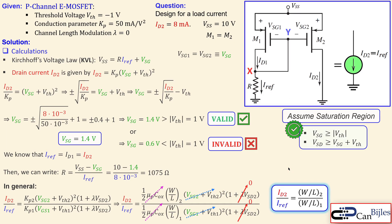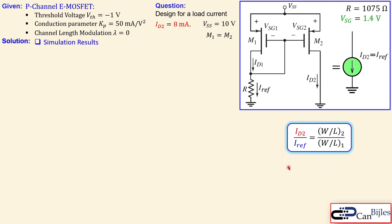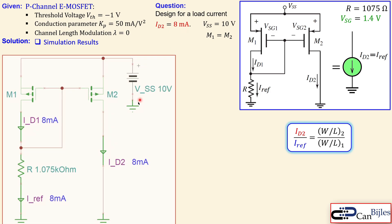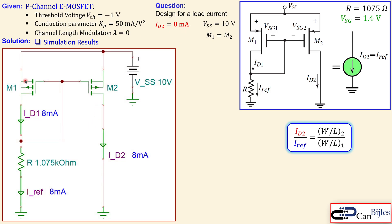Let's look at the simulation results. We have R of 1075 ohms, which produces 8 mA according to our calculations. We have MOSFETs M1 and M2 as P-channel. You see ID1 is 8 mA, Iref is 8 mA, and ID2 is 8 mA. The resistor is 1.075 k-ohms as calculated. This verifies our calculations.